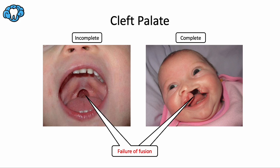Cleft palate affects approximately one in every 2,000 births. It results from a lack of fusion between the right and left maxillary prominences, specifically the palatal shelves, resulting in an opening or split in the roof of the mouth. Cleft palate more commonly affects girls than boys, which is the opposite of cleft lip alone, but otherwise has the same ethnic predilection. An incomplete cleft would start at the uvula and go up to involve the soft palate, or even as far as part of the hard palate.